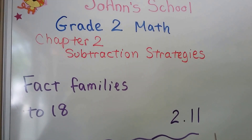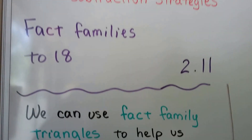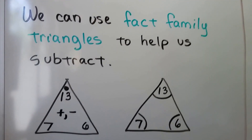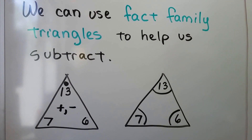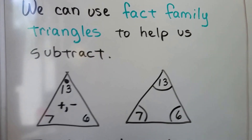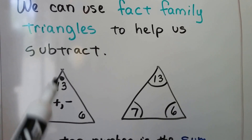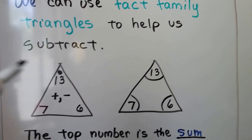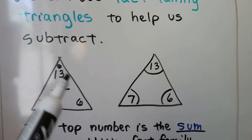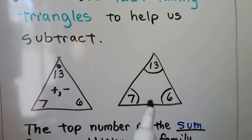Fact families to 18, lesson 2.11. We can use fact family triangles to help us subtract. You might see a couple of different types of fact family triangles. You might see them with a plus and a minus in the middle with a little dot on the top — that dot tells you that's the sum, and you can do addition and subtraction with this one triangle.